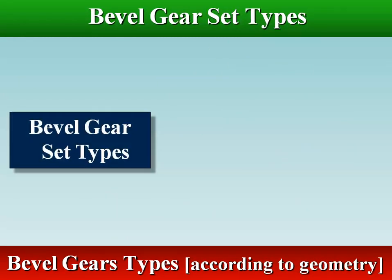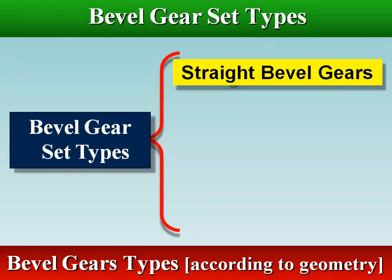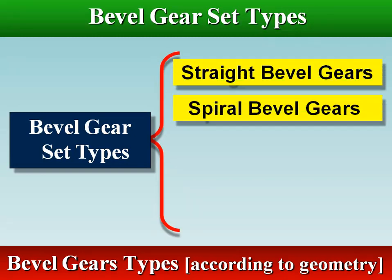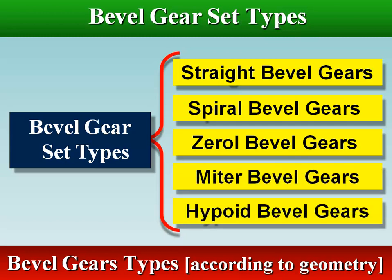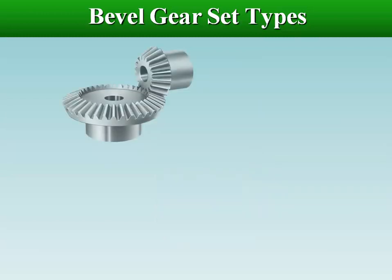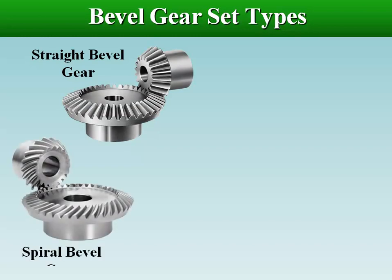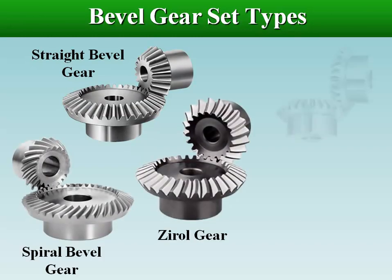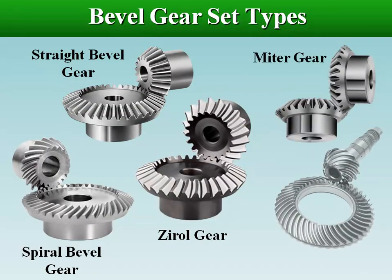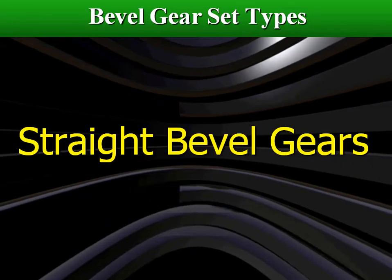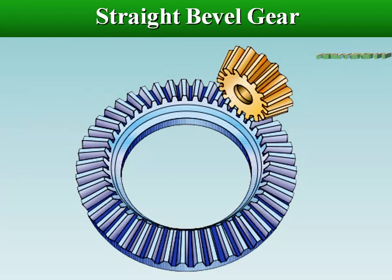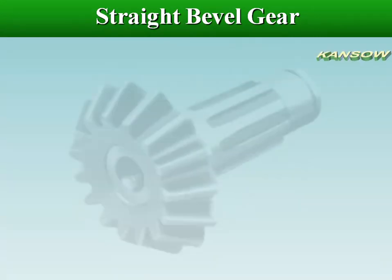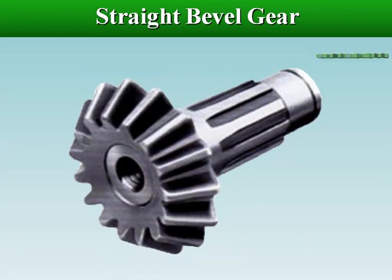According to geometry, bevel gears are classified as straight, spiral, zerol, mitre, and hypoid bevel gears. The straight bevel gears are the simplest types of bevel gears for transmitting power between intersecting shafts.